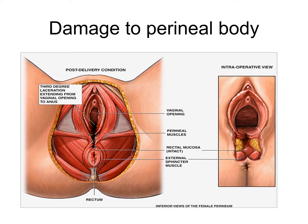Damage to the perineal body: the perineal body is essential for the integrity of the pelvic floor, particularly in females. Its rupture during vaginal birth leads to widening of the gap between the anterior borders of the levator ani muscles on both sides, predisposing the woman to prolapse of the uterus, rectum, or even the urinary bladder.